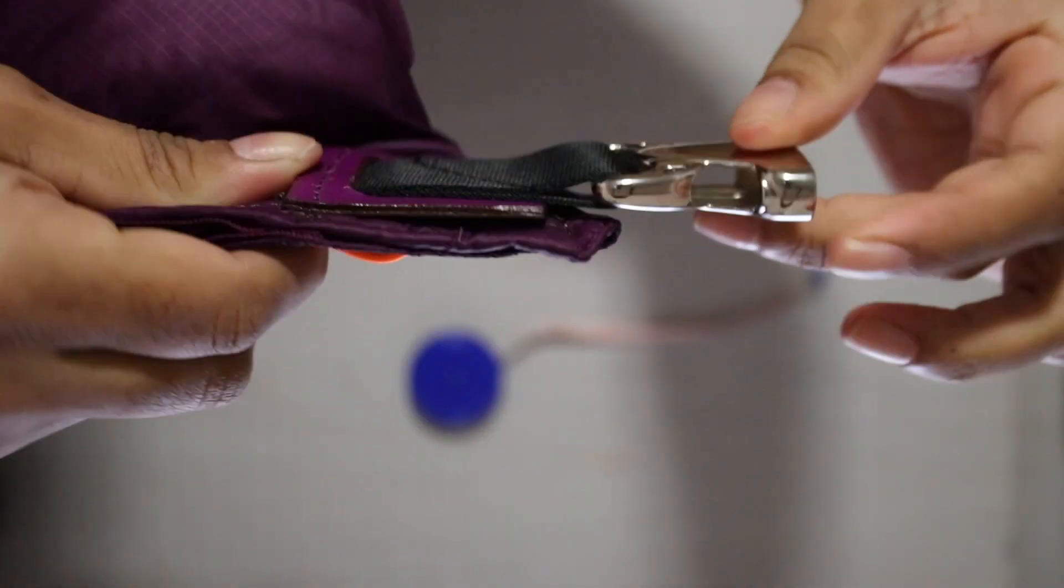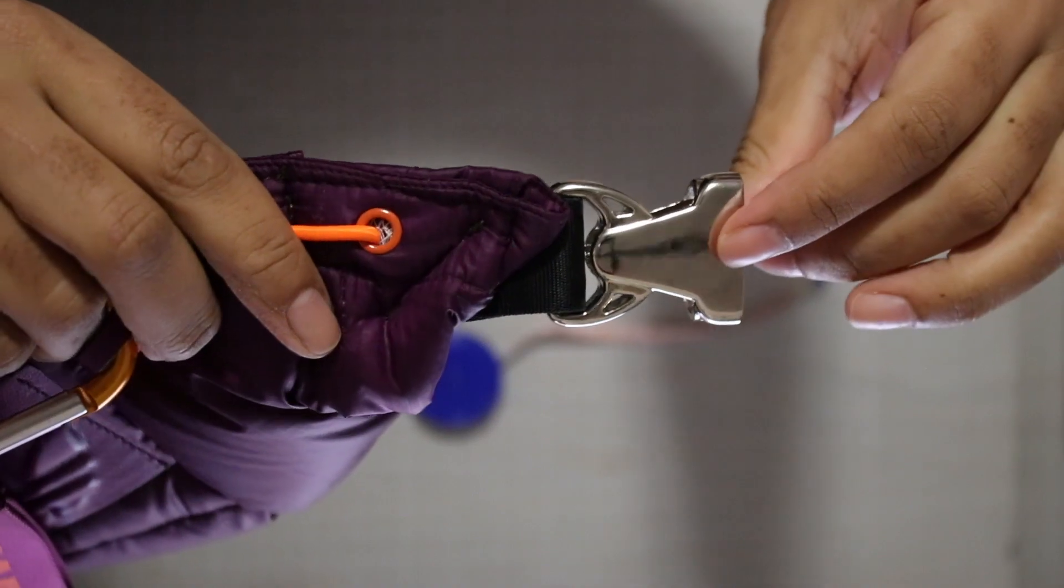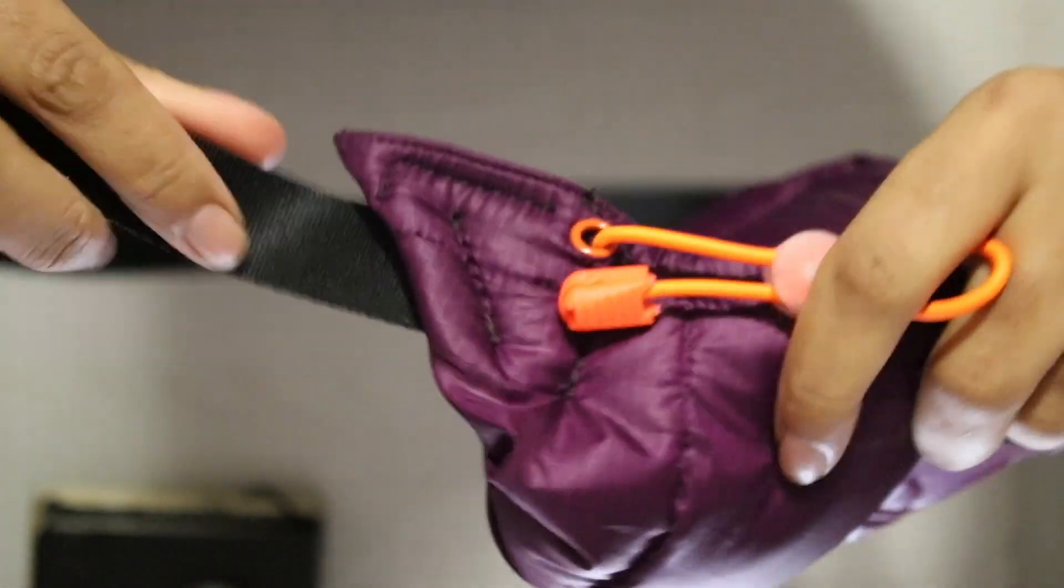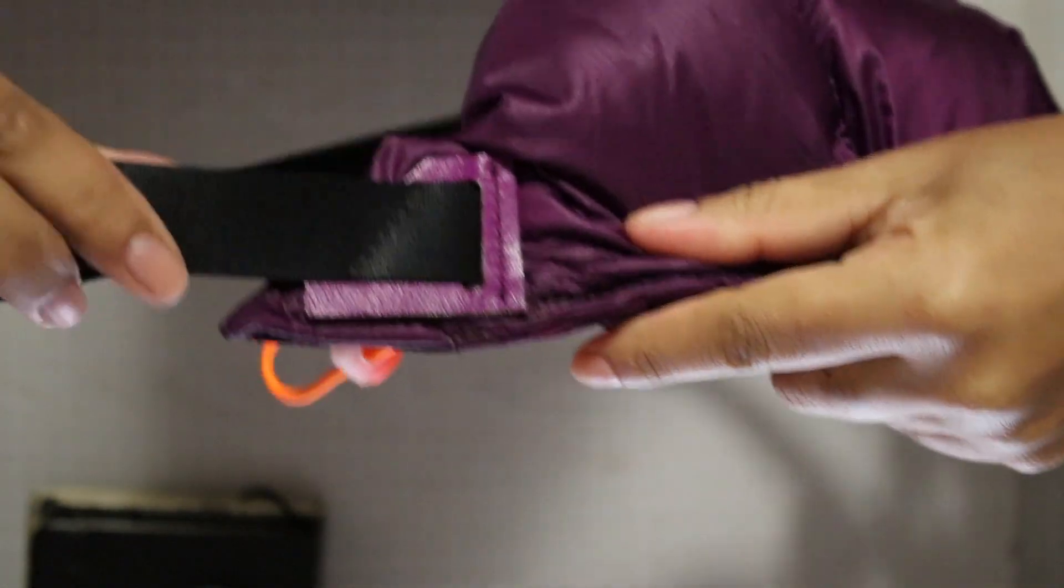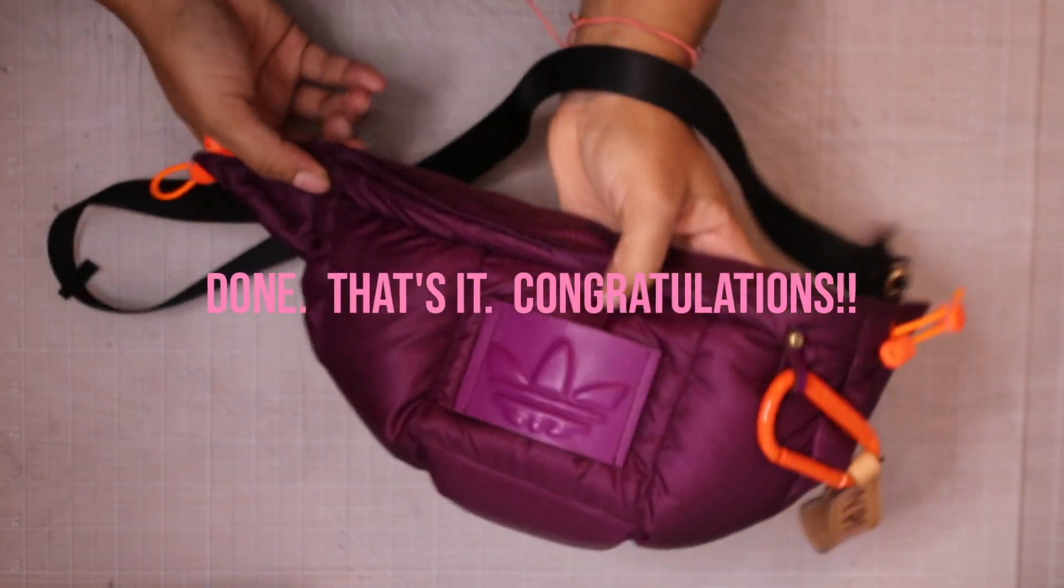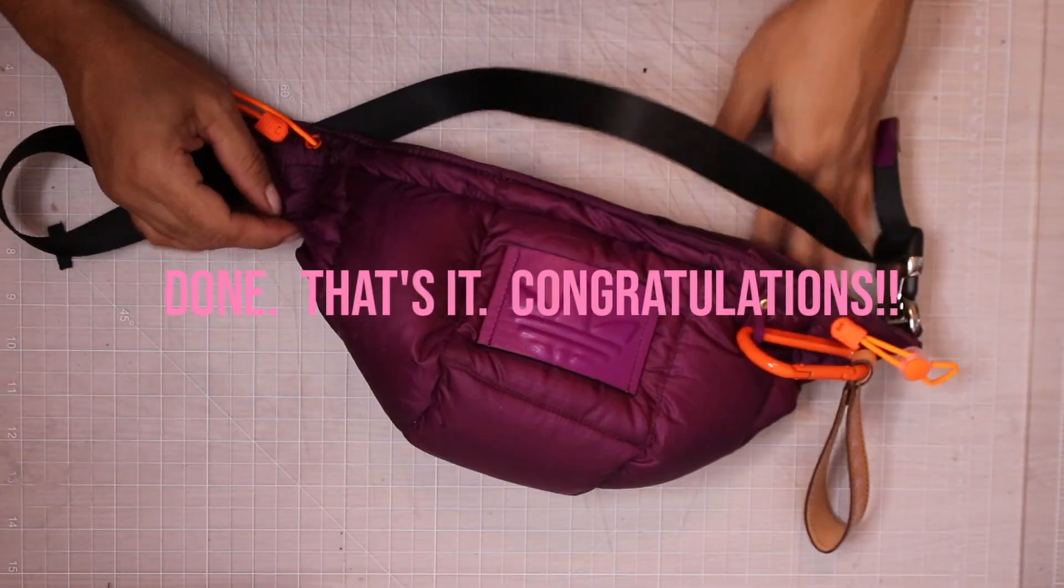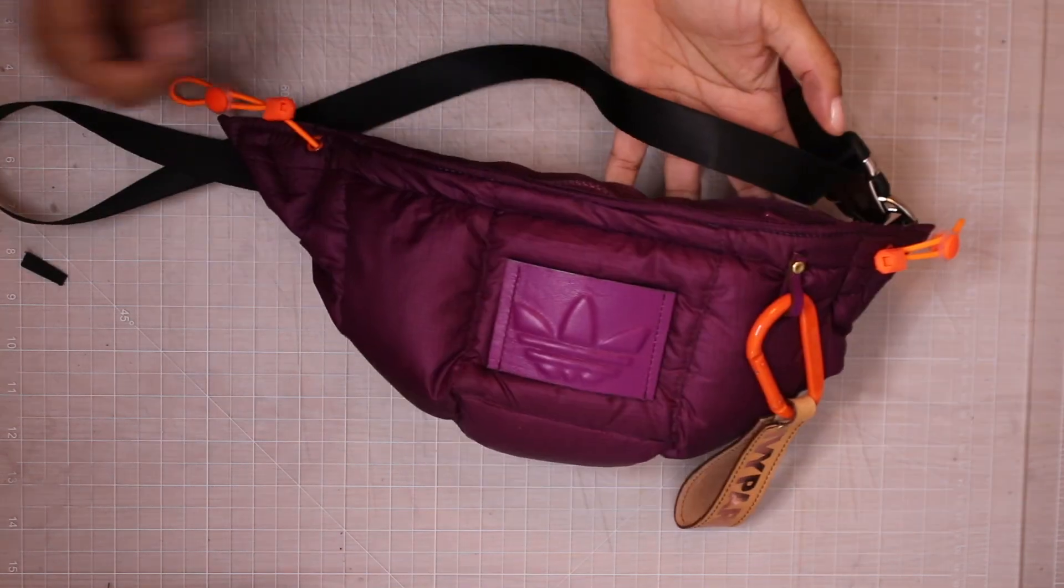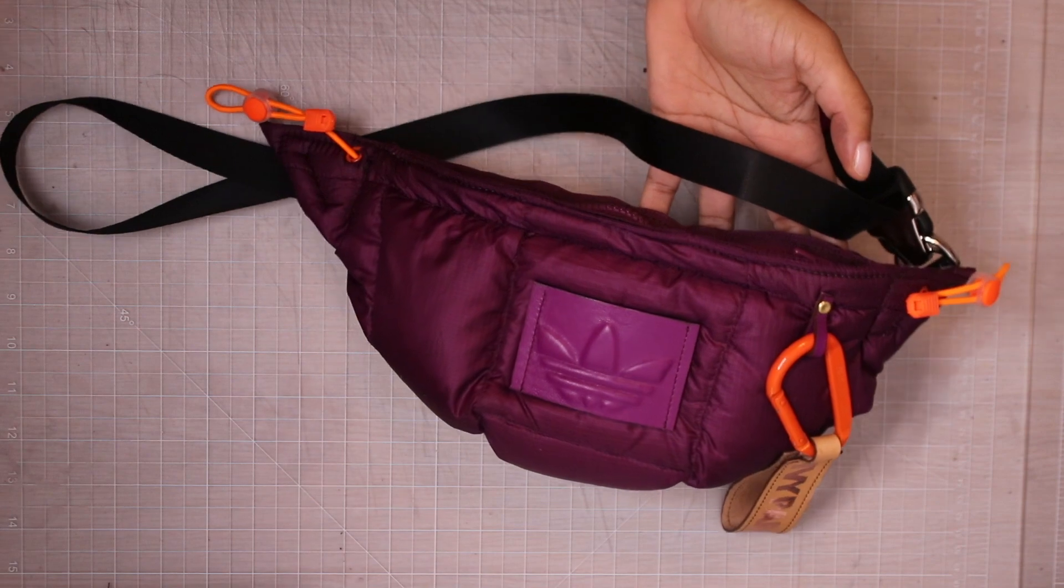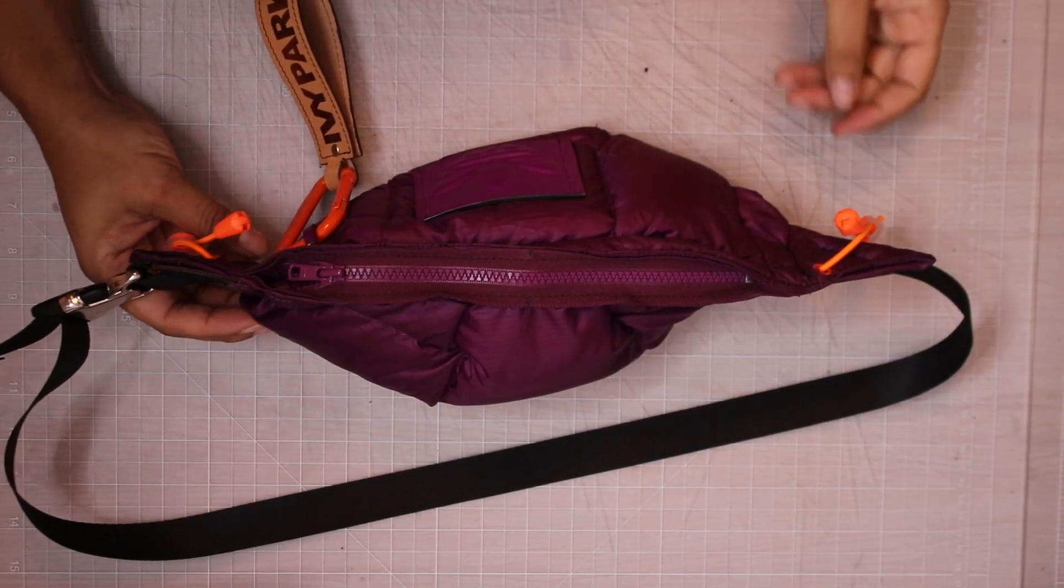An additional thing I did was to sew a diagonal stitch along the edge of the webbing—this was to make sure everything was secure and flat. Okay, that's it, done, finished! There are no more parts to the part part. Congratulations, you have finished a waist pack! Thank you for tuning in, and I hope you enjoyed this Thrift Flip Accessories Edition.